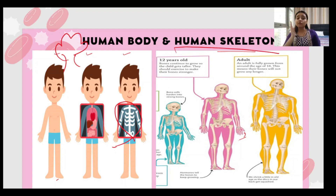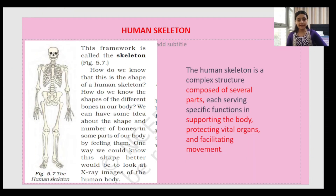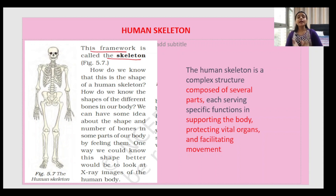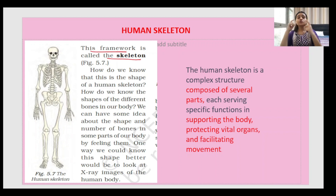The arrangement and collection of bones is the human skeleton. The NCRT book defines this as a framework called the skeleton — the framework of bones. This framework has a specific design and pattern. Bones are not randomly placed; there are specific bones for the skull, the hands, and the legs. This framework is called the skeleton, and since we are studying humans, we call it the human skeleton.